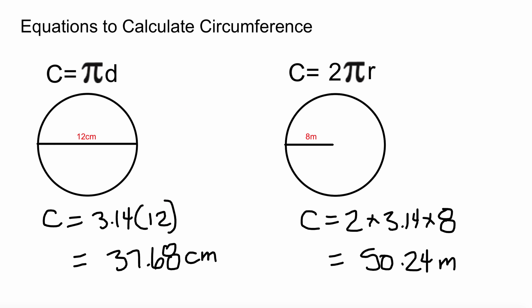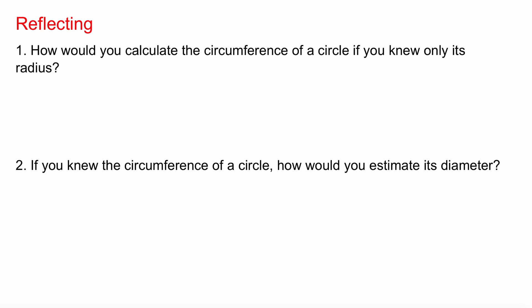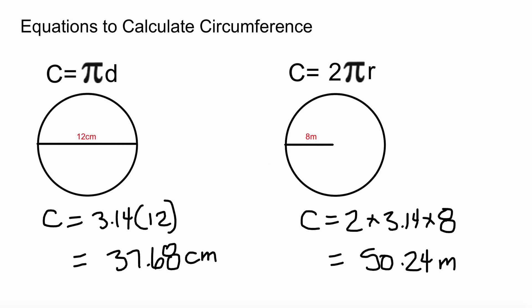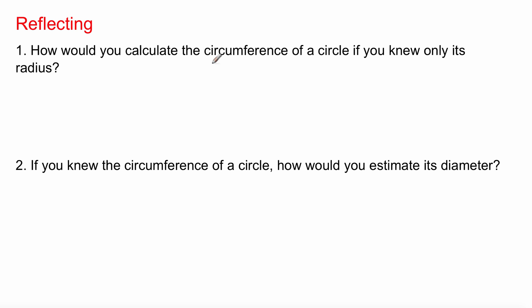All right. Finally, let's reflect, shall we? How would you calculate the circumference of a circle if you know only its radius? Well, there is the formula that we used. Radius times, two times radius, two times pi equals radius. So you can use that formula.